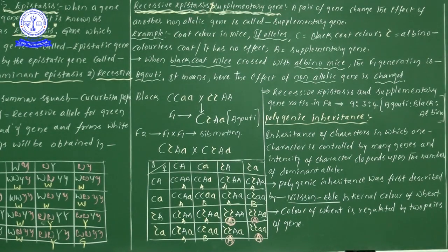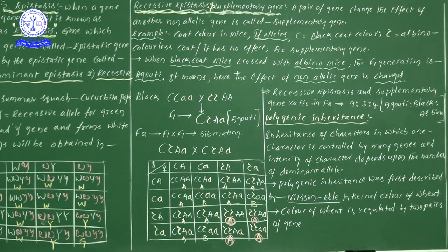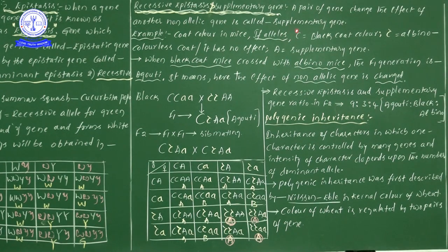Now let us see another example — recessive epistasis and supplementary gene. A pair of genes changes the effect of another non-allelic gene. When a pair of genes changes the effect of another non-allelic gene, that kind of phenomenon is taken as supplementary gene. Example: coat color in mice.